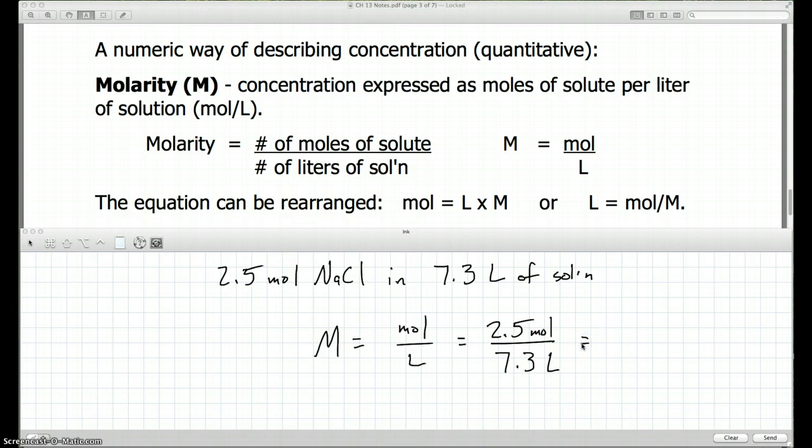And I do that. Let's see here. I do 2.5 divided by 7.3. And that gives me a big long number. For sig figs, I want 2 sig figs. So my answer would be 0.34.